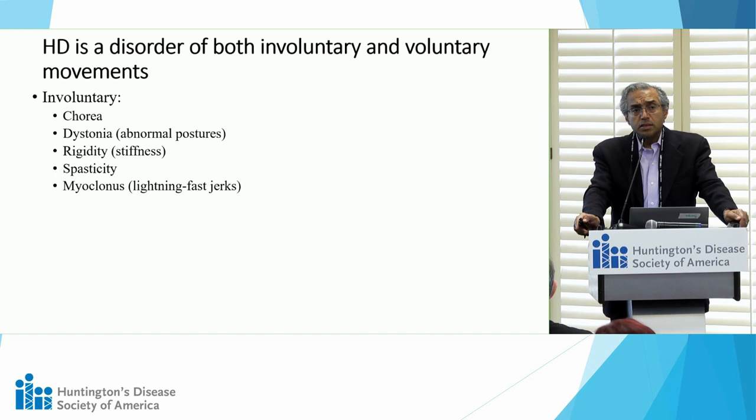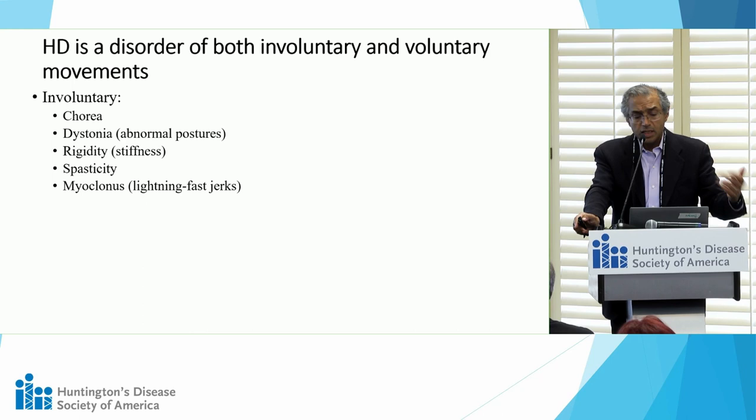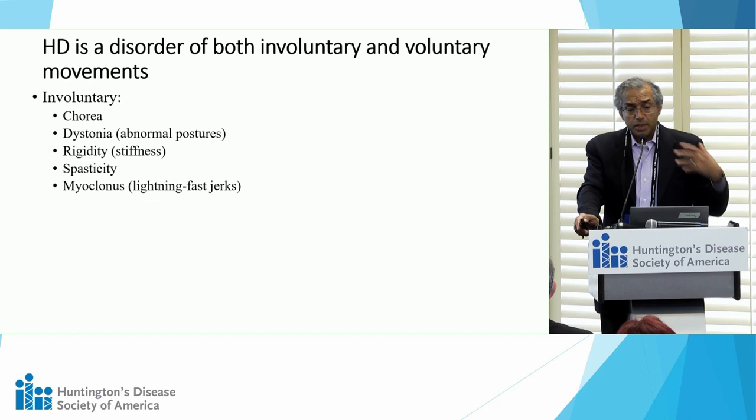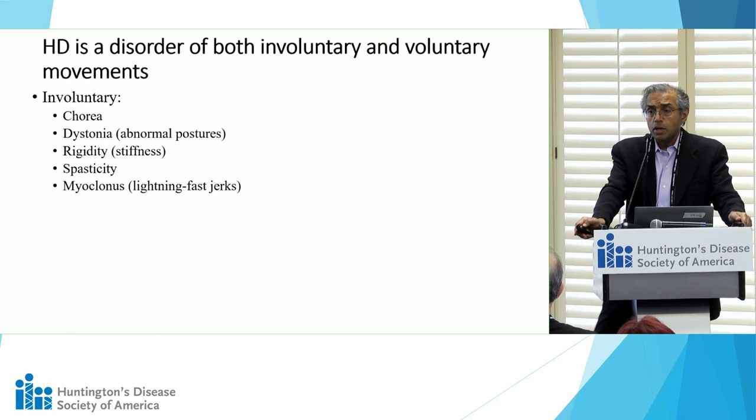HD is interesting because there are problems both with voluntary and involuntary movement. Among the involuntary movement problems beyond chorea is dystonia, which refers to twisting and turning movements often with sustained abnormal postures; rigidity or stiffness that the examiner might feel on examination; spasticity, another form of increased tone; and myoclonus, which are quick jerk-like movements more common in younger patients with HD, especially those who might have epilepsy.